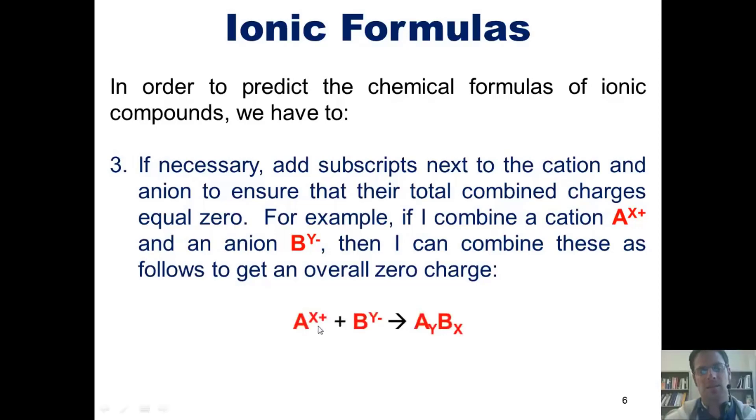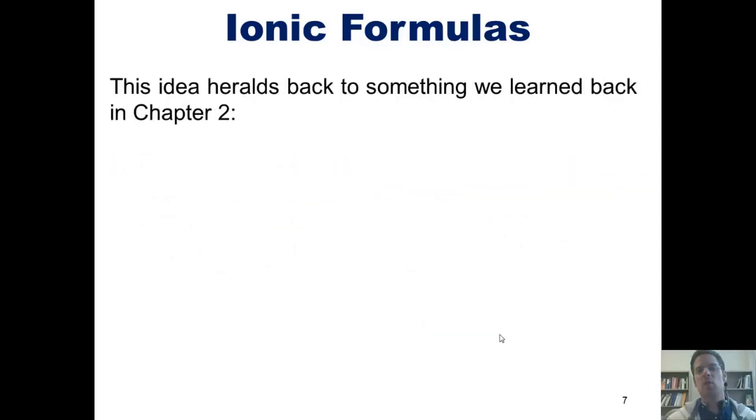then I can combine them as follows to get an overall zero charge. Putting A with a plus x charge together with B with a minus y charge, I end up with a final formula of AyBx. In other words, the charge of B ends up being the subscript of A, and the charge on A ends up being the subscript of B, with the negatives and positives removed. This, of course,